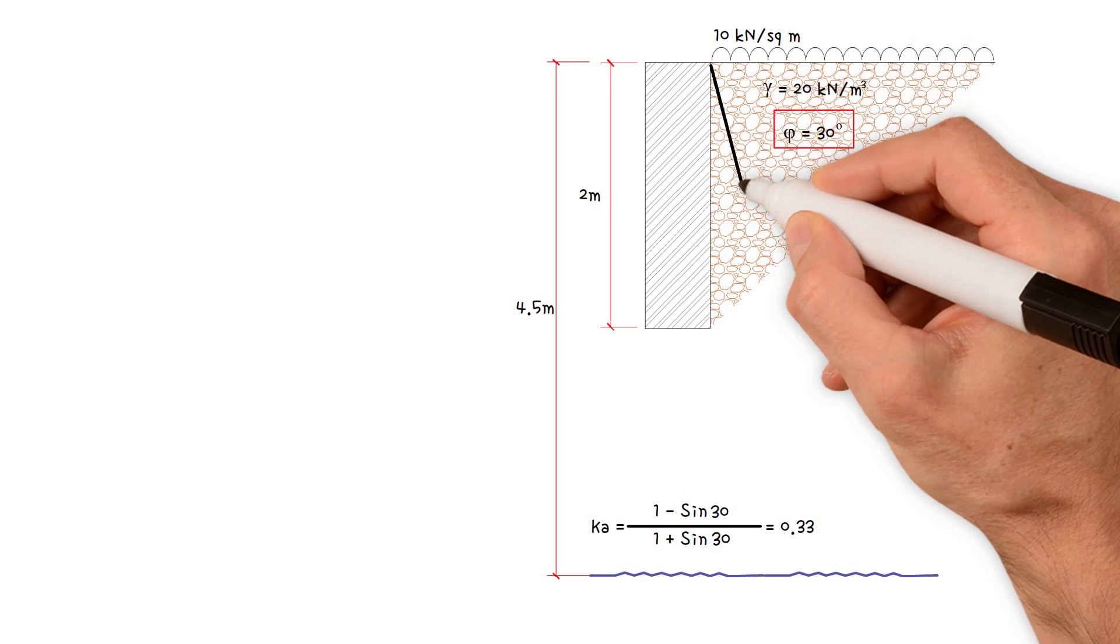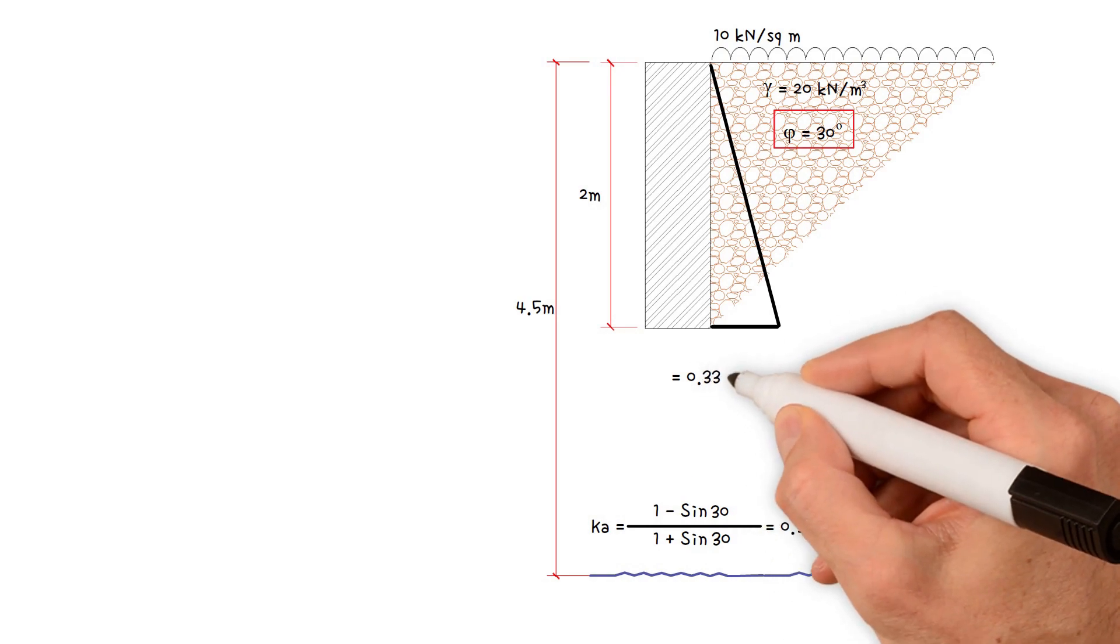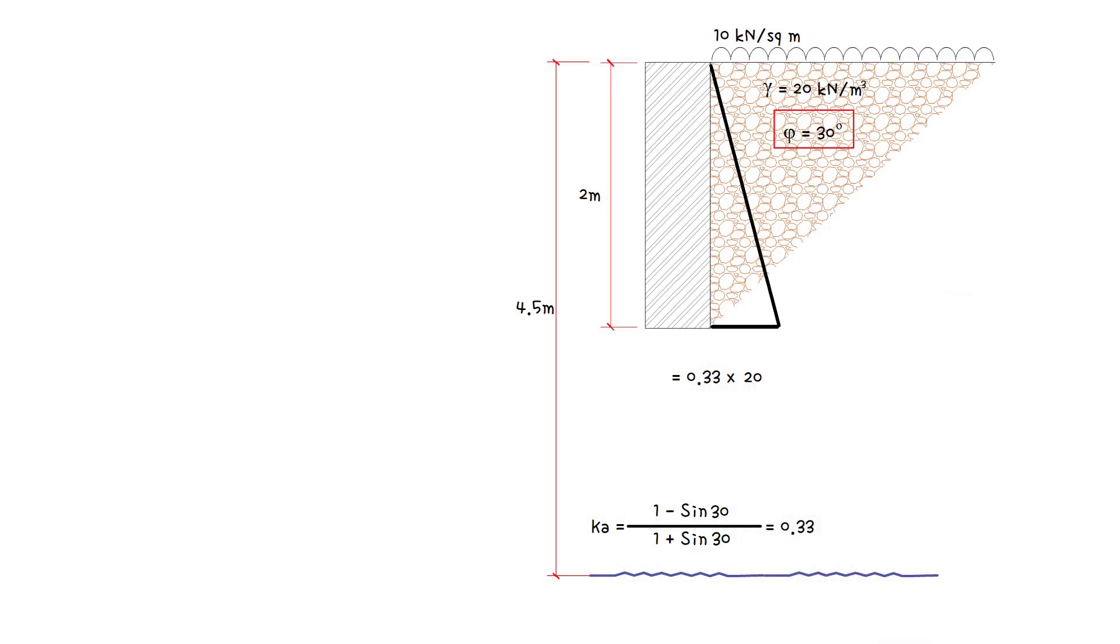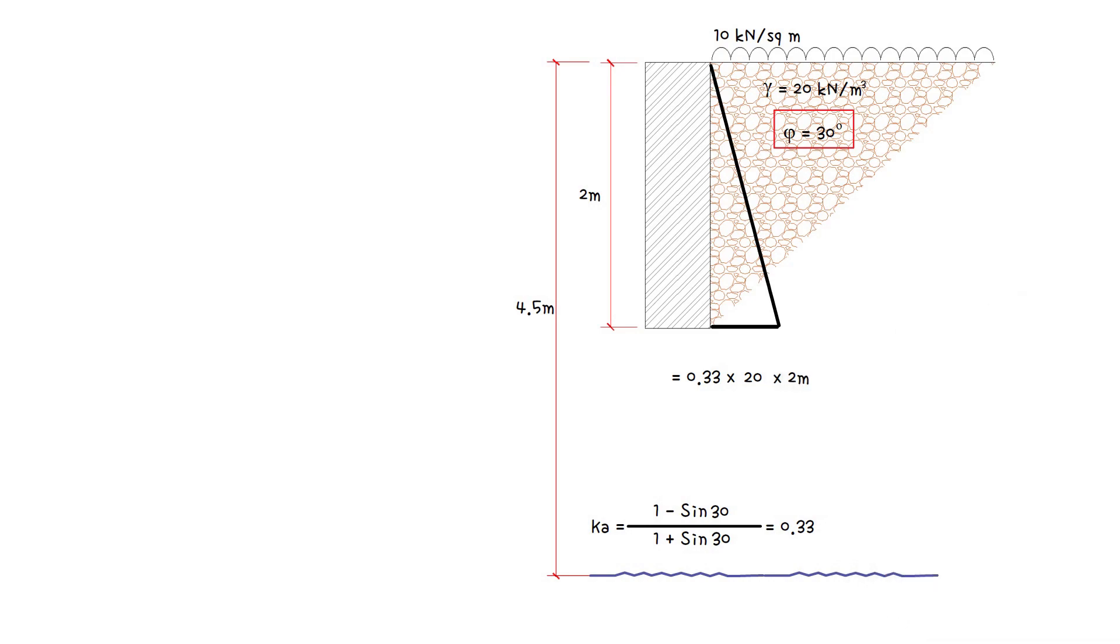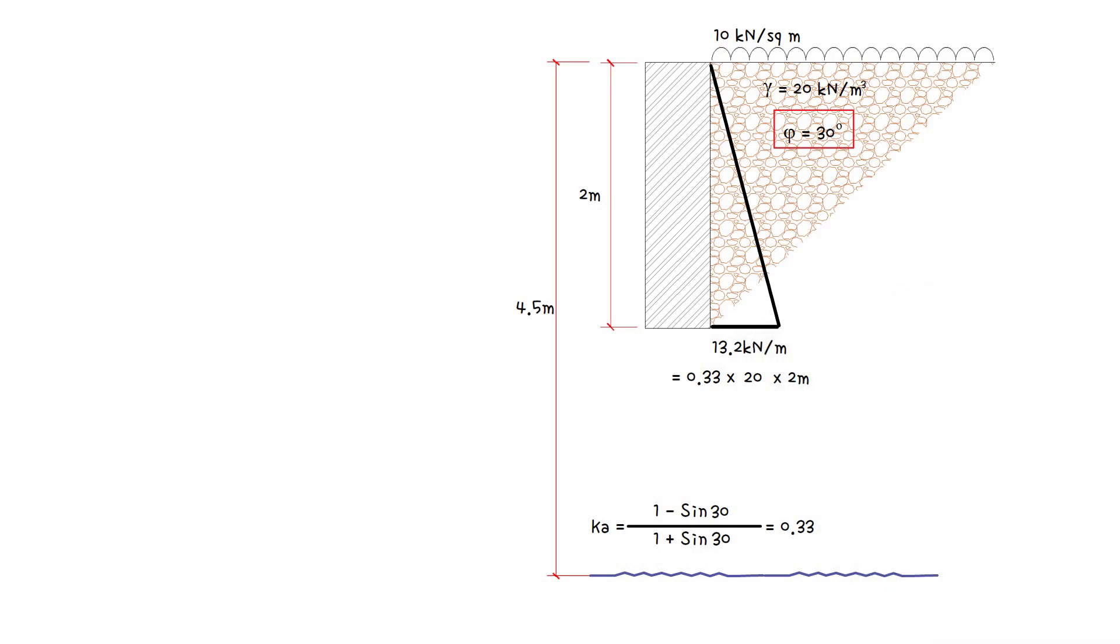Next, working out the active pressure at the base of the wall, which equals the coefficient of active pressure 0.33 times the soil density 20 kN per m³ times the height 2 meters. This gives us a value of 13.2 kN per meter per meter run.